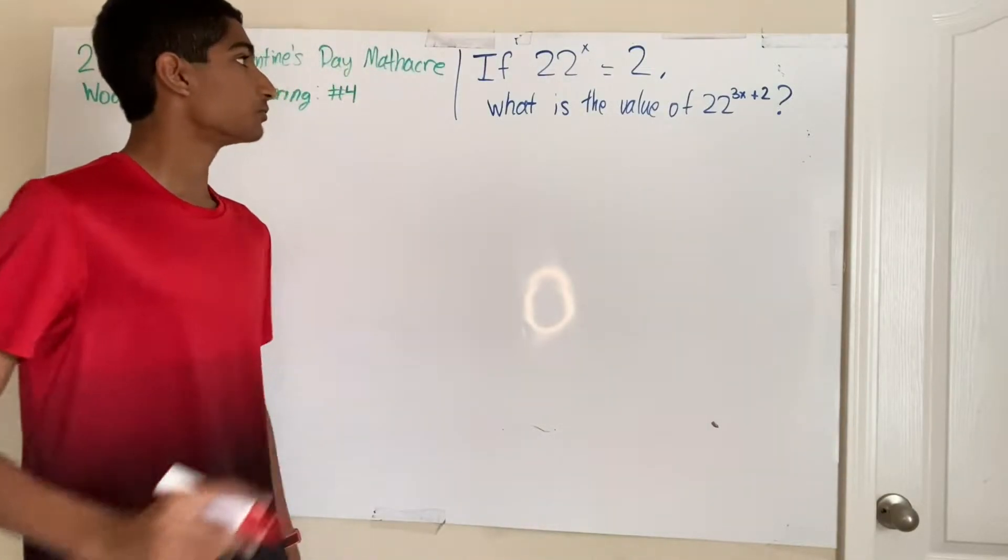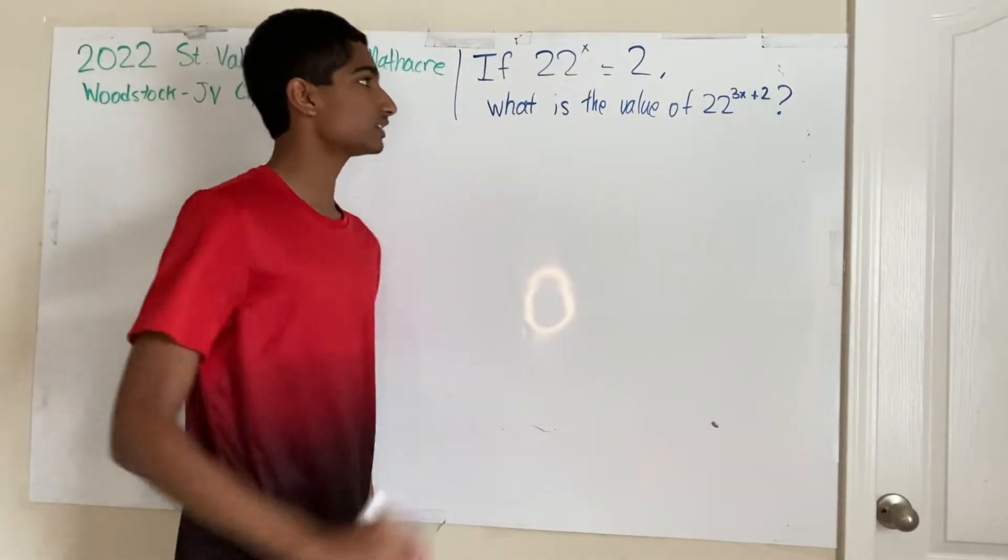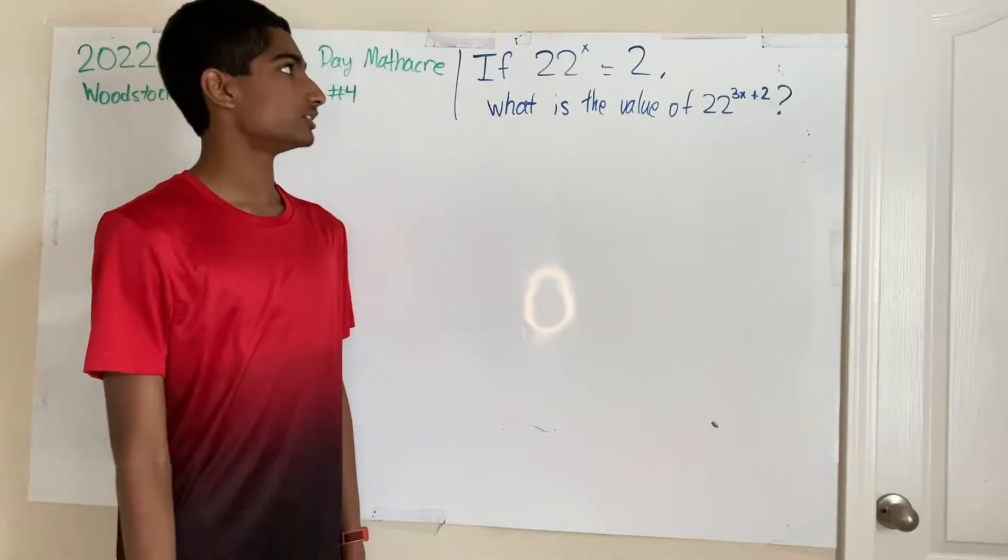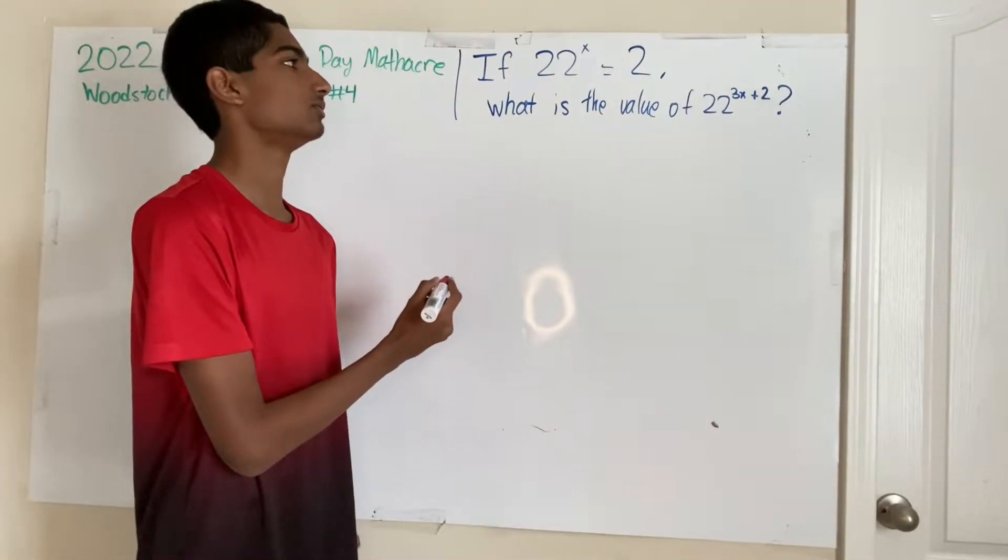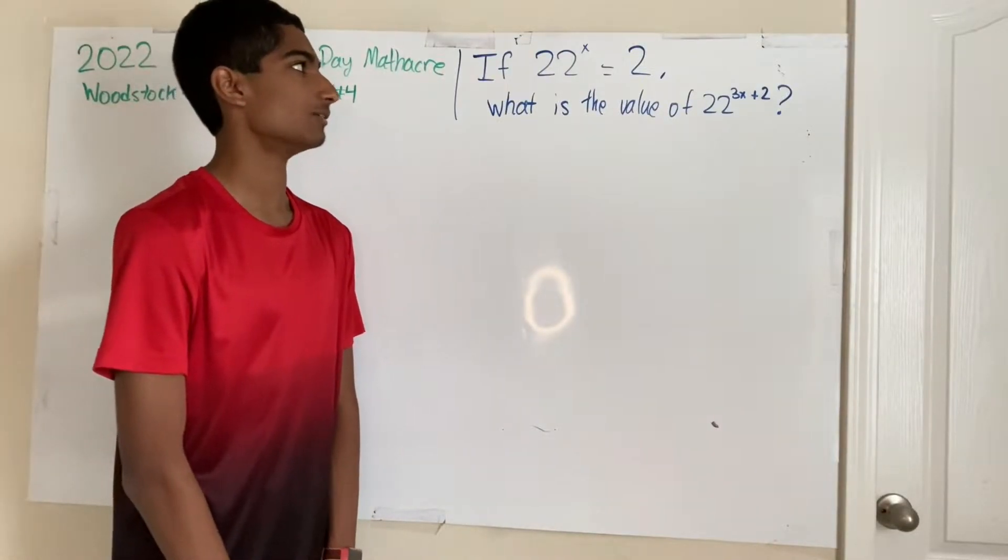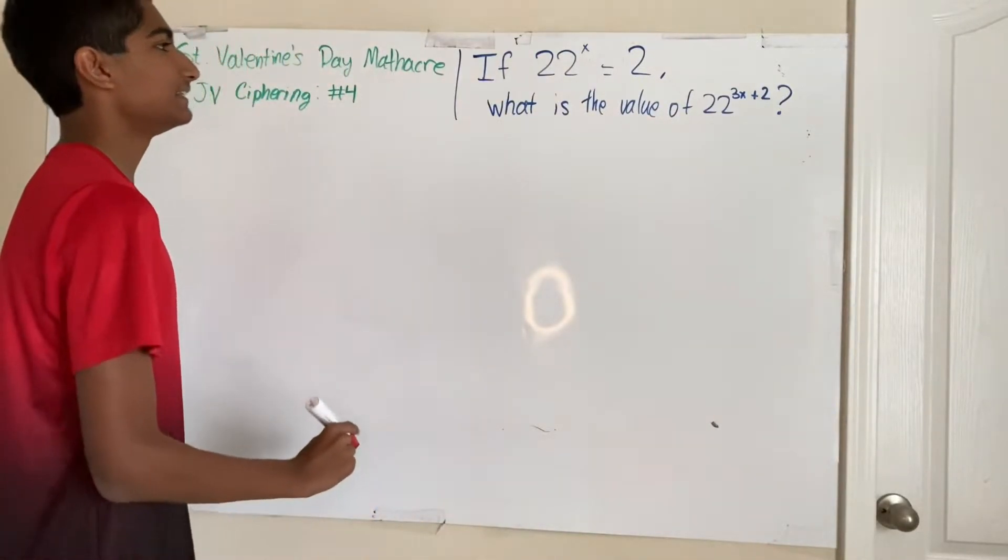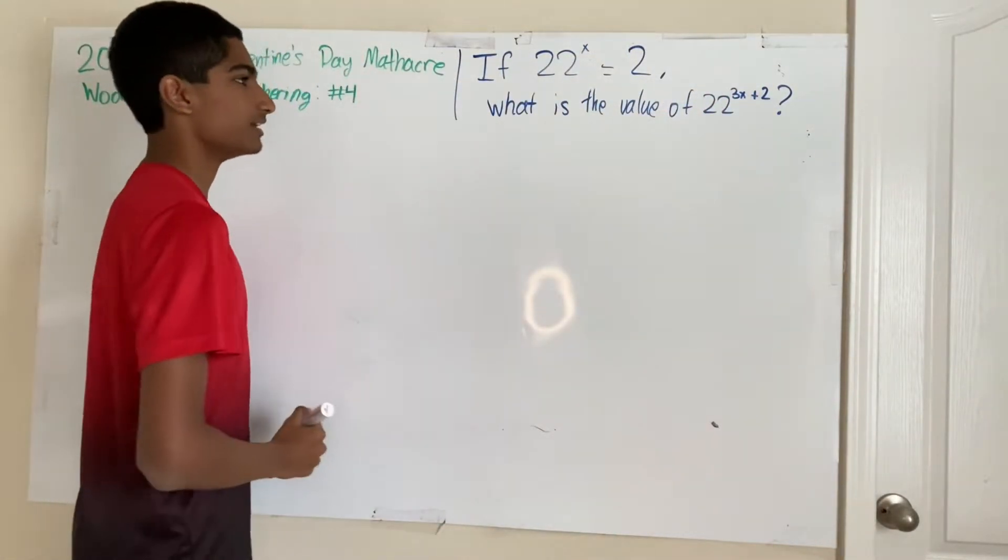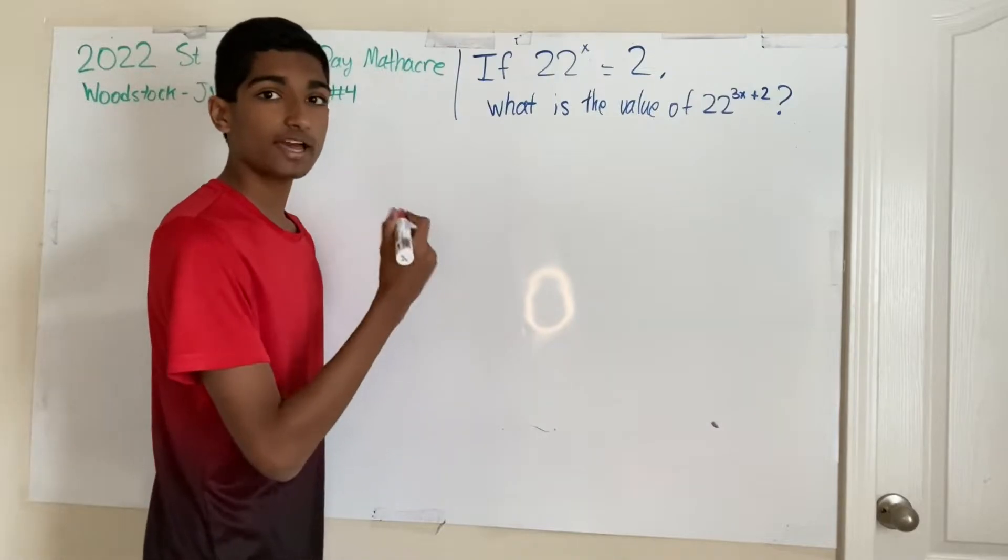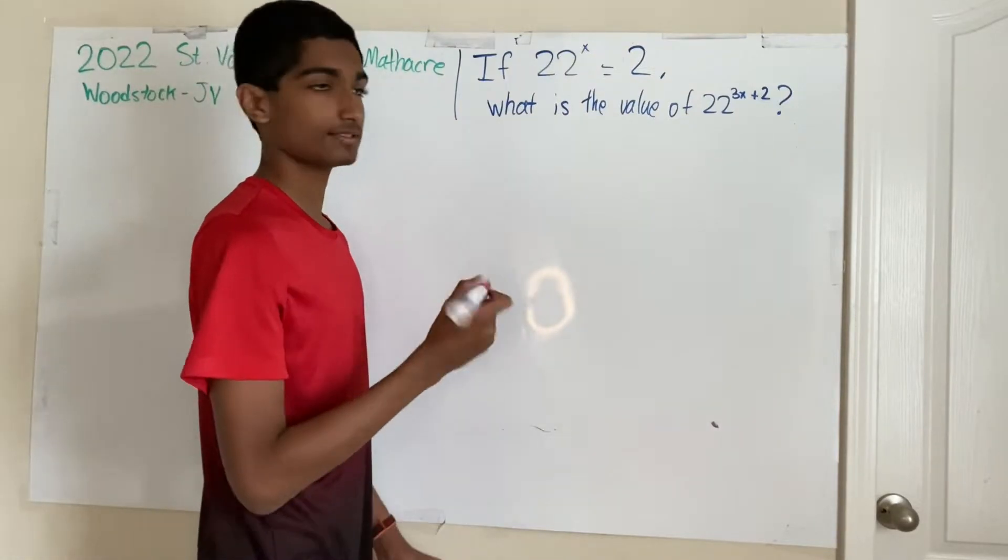So if you just brute force it and directly try and find x, you won't get very far since x equals log base 22 of 2 and that's not fun to solve. And then you have to plug that in here and solve and that's too much a mess. So I'm going to use some exponent rules to try and get the solution as fast as possible.